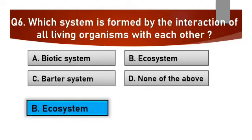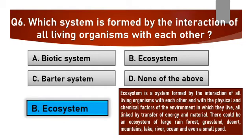Answer is B: Ecosystem. Ecosystem is a system formed by the interaction of all living organisms with each other and with the physical and chemical factors of the environment in which they live, all linked by transfer of energy and material. There could be an ecosystem of large rainforest, grassland, desert, mountains, lake, river, oceans, and even a small pond.